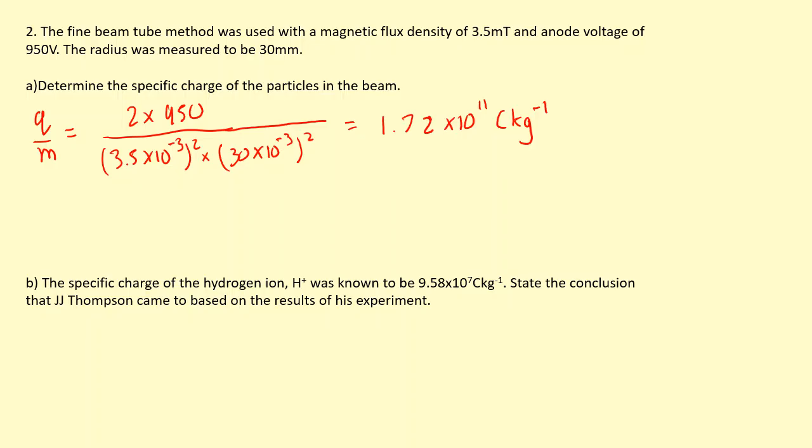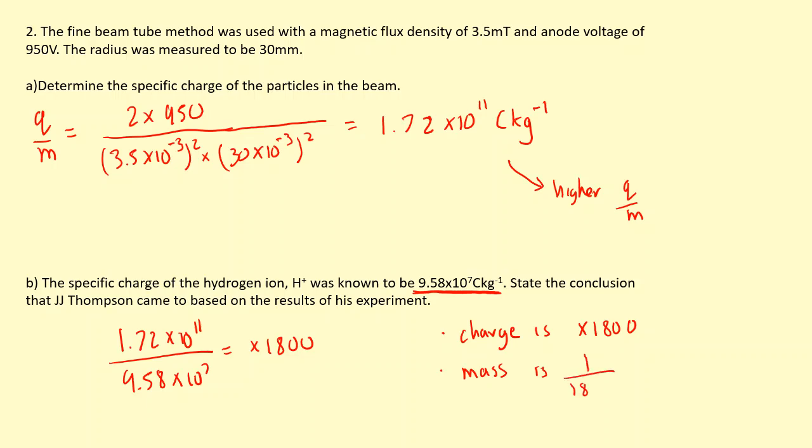At that point in time, the smallest specific charge they knew was the hydrogen ion, in other words a proton. When they compared these two together, they realized this new particle that they'd discovered has a much higher specific charge. So the conclusion from that was either the charge of this new particle, the electron, is 1800 times bigger, or the mass is much smaller. Of course we know now it's the second one that's true.